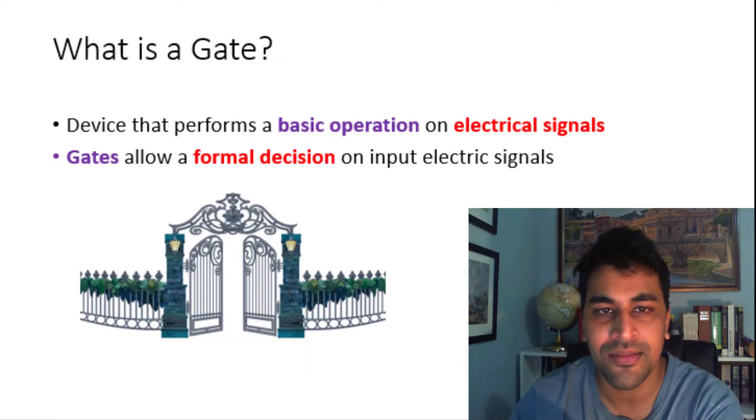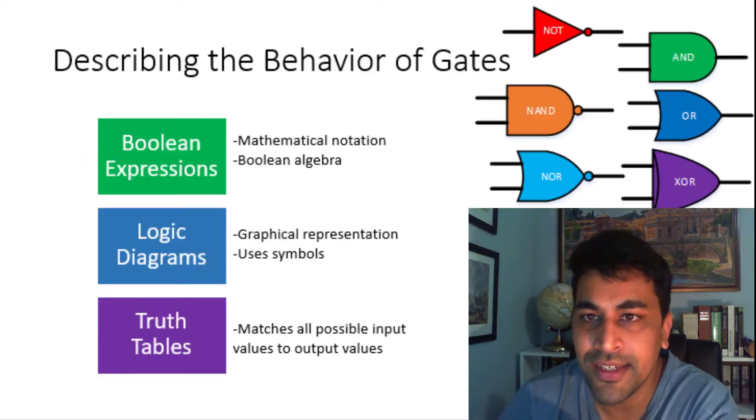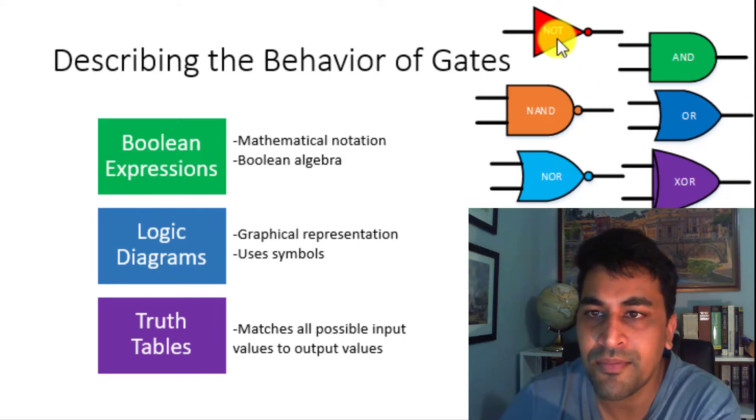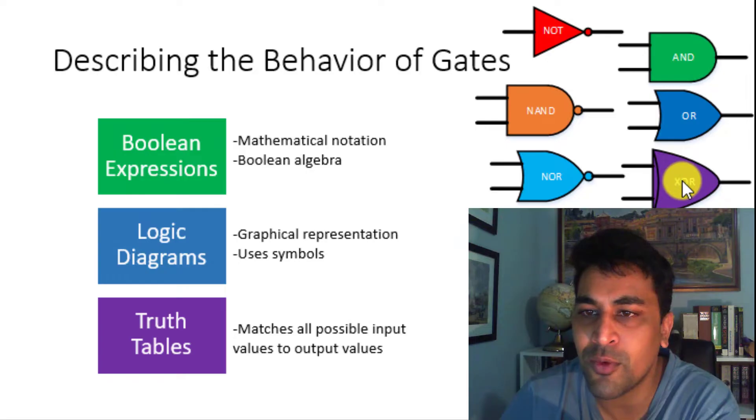So what is a gate? A gate is a device that performs a basic operation on electric signals. This allows gates to provide formal decisions on input electric signals. There are six gates: the NOT gate, the AND gate, the NAND gate, which stands for NOT AND, the OR gate, the NOR gate, which stands for NOT OR, and the exclusive OR gate.